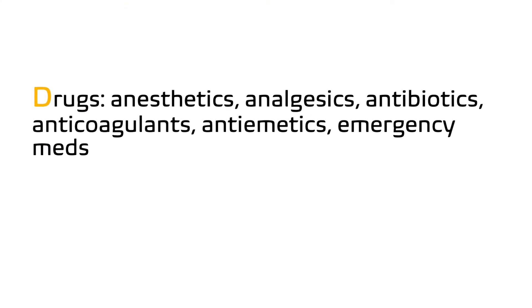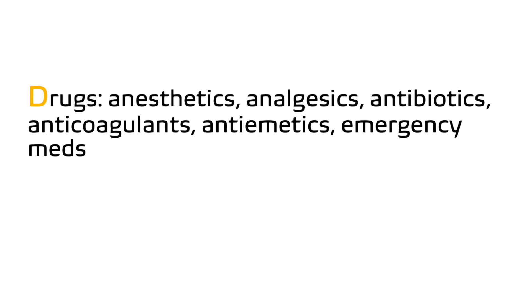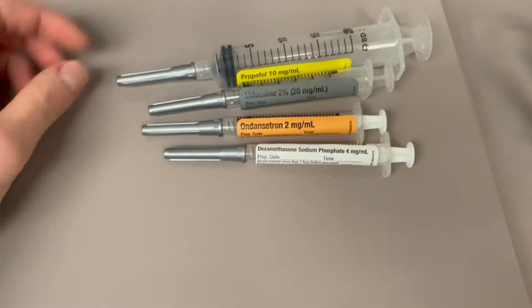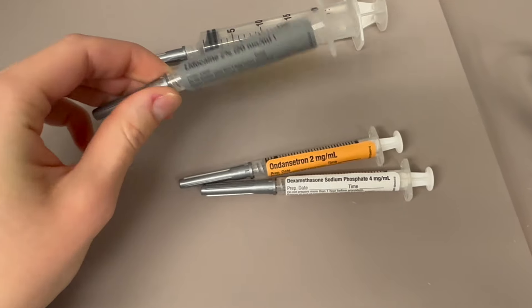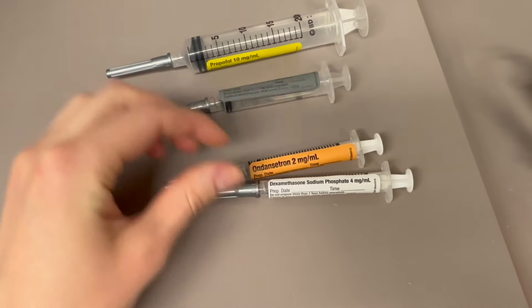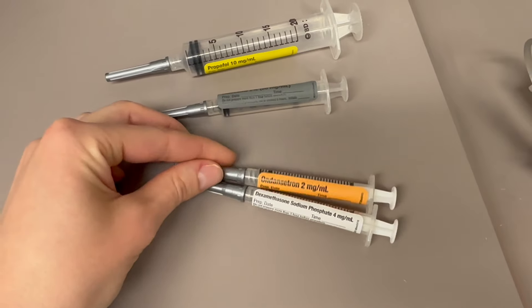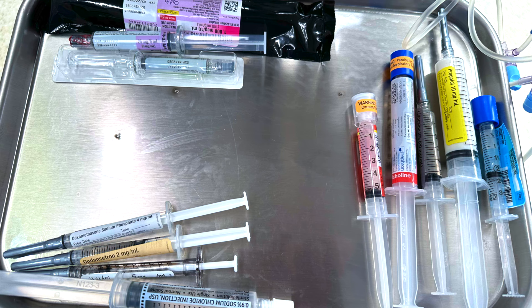The last thing to prepare are the medications. Please include your anesthetics, analgesics, antibiotics, anticoagulants, antiemetics, and emergency medications. There are four syringes that I always pull out and label: a 20cc one for propofol, a 5cc syringe for lidocaine, and 3cc syringes for Zofran and dexamethasone.